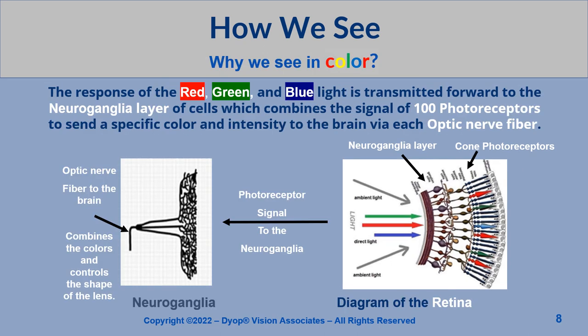The response of the red, green, and blue light is transmitted forward to the neuroganglial layer of cells, which combines the signal of 100 photoreceptors to send a specific color and intensity to the brain via each optic nerve fiber.